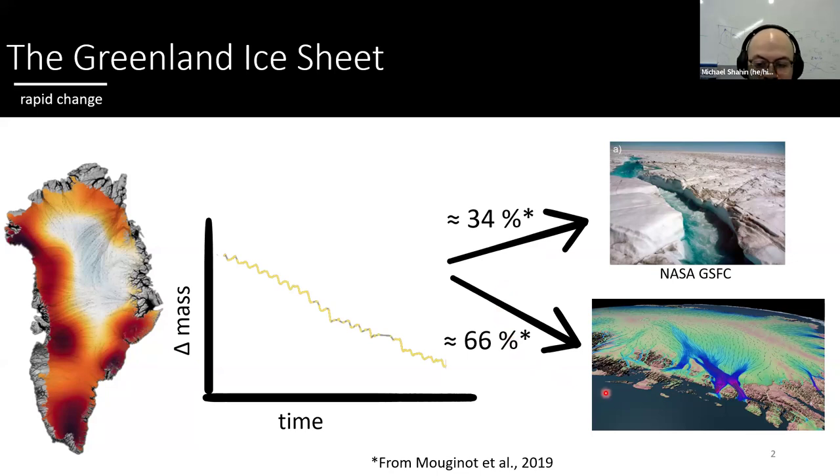One, surface mass balance, which accounts for about 34% of the mass loss. Think about surface runoff, melting, processes like that. And the rest, the 66%, is accounted for by ice dynamics. So think about speeding, thinning, grounding line retreat, and iceberg calving, the mechanical detachment of ice itself.